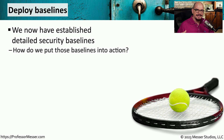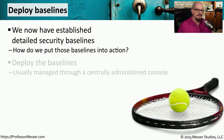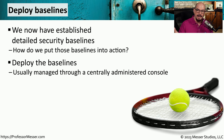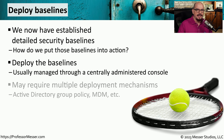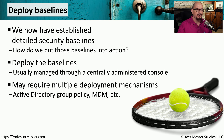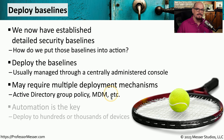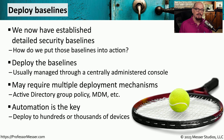You've now compiled this list of security settings that will be associated with the application, the operating system, and any other part of the application instance. Now it's time to deploy those settings to all of those different components. Sometimes you can do this through a central console like the Microsoft Security Compliance Toolkit. But other settings may require additional applications or processes. You might push things out through Active Directory group policy, or you might have a separate MDM that pushes out security settings to your mobile devices. For baselines as large and complex as these, you'll want some type of automated process, which would allow you to deploy baselines to hundreds or even thousands of different devices.